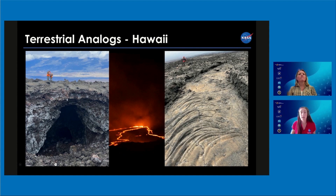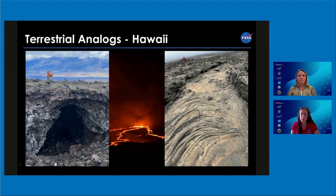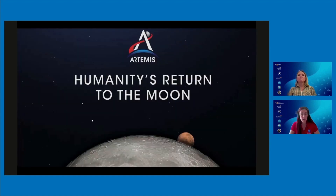We make measurements from the surface to understand the geometry and depth at which a lava tube is located. When we have satellite data from the Moon or Mars, or when astronauts are on the surface using instruments we develop, we will have already developed a technique to tell them the geometry, length, and depth of a lava tube. It's important to locate these caves because astronauts in the future will ideally use them to hide from radiation. We are doing all this field work on planetary analogs for humanity's return to the Moon.